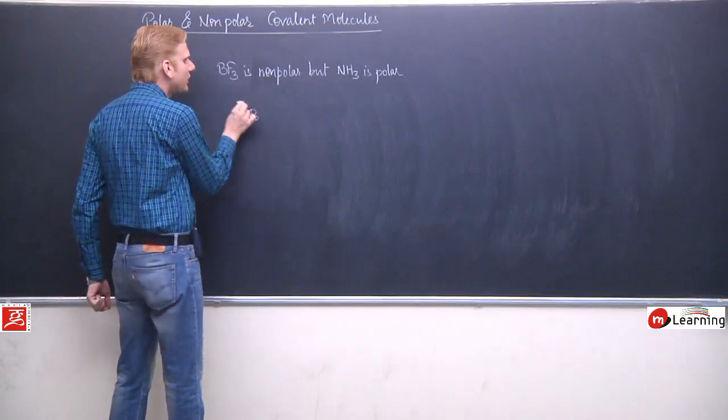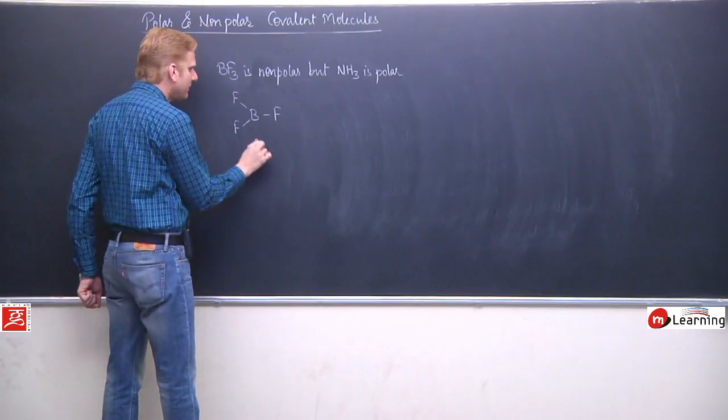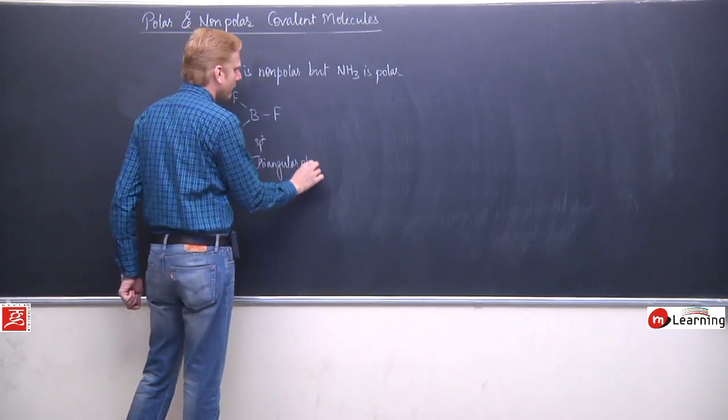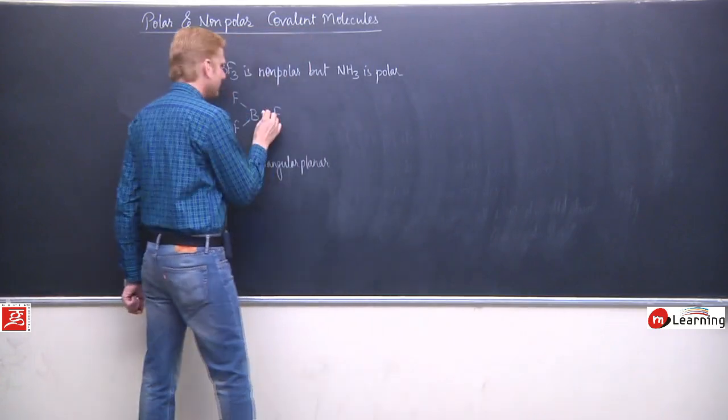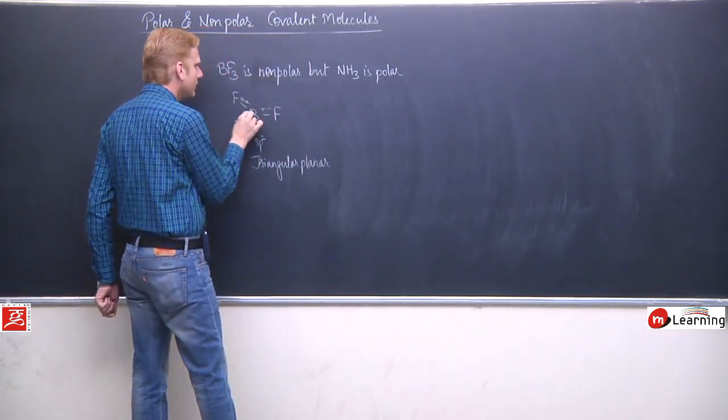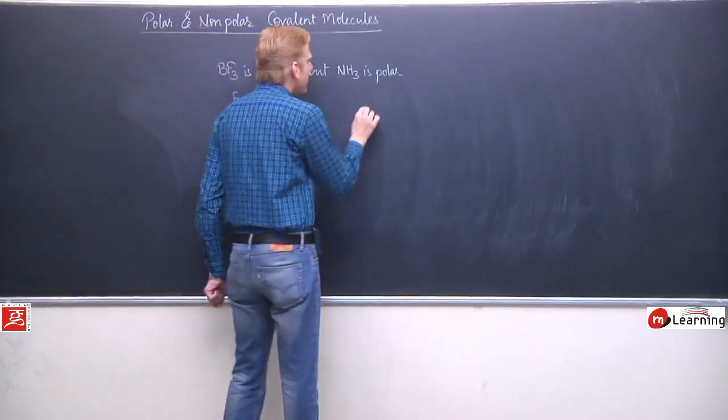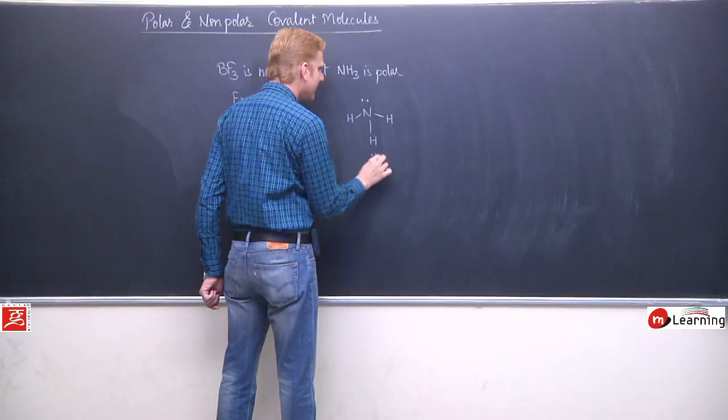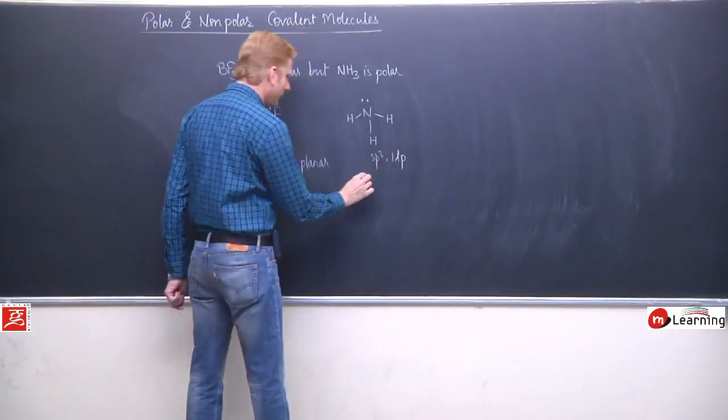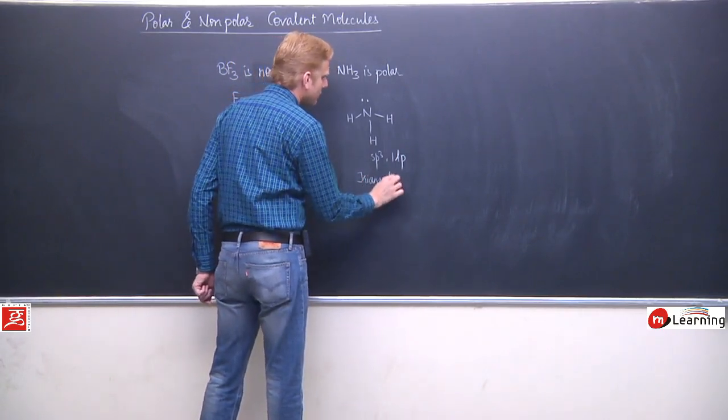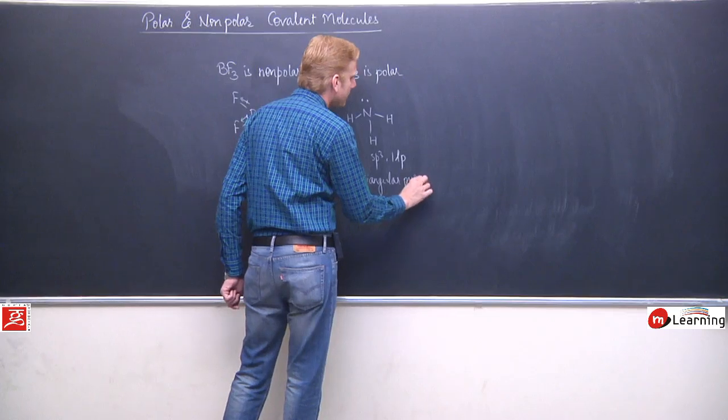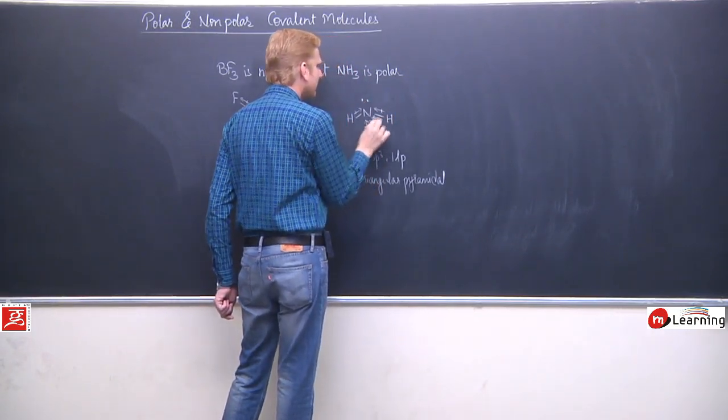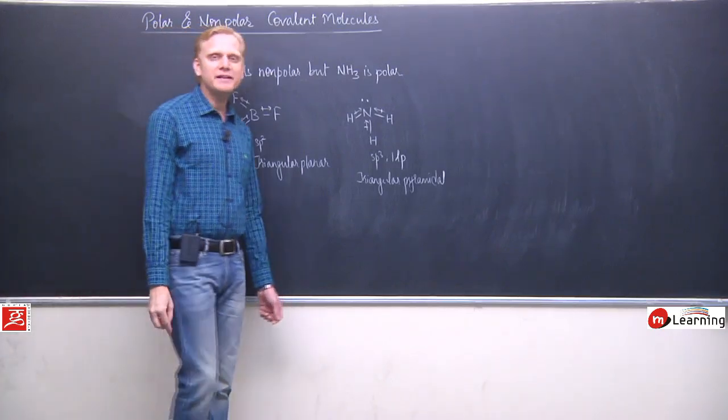BF3 is a triangular planar molecule. Boron is sp2 hybridized, triangular planar. Dipole moment with cancelling effect is zero. NH3, nitrogen is sp3 hybridized, but this time nitrogen has a lone pair of electron, so the molecule is triangular pyramidal. No cancelling effect, we will get some resultant value of dipole moment.